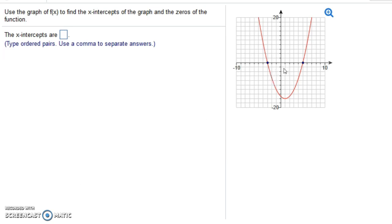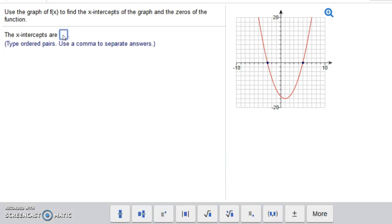It says, use the graph of f(x) to find the x-intercepts of the graph and the zeros of the function. So what are the x-intercepts? Well, notice the x-intercepts are where we cross the x-axis, and the x-intercepts are really ordered pairs. So notice we have an x-intercept at negative 3, comma 0.